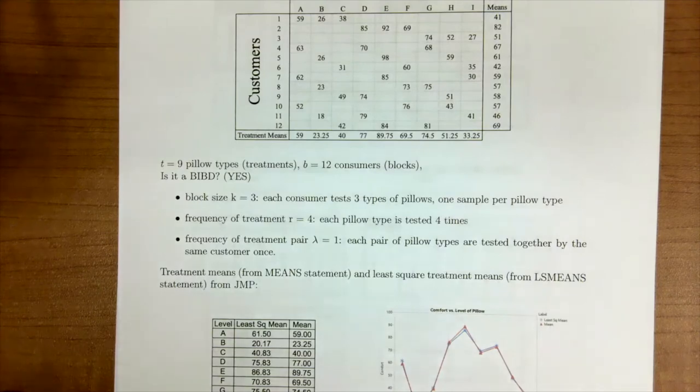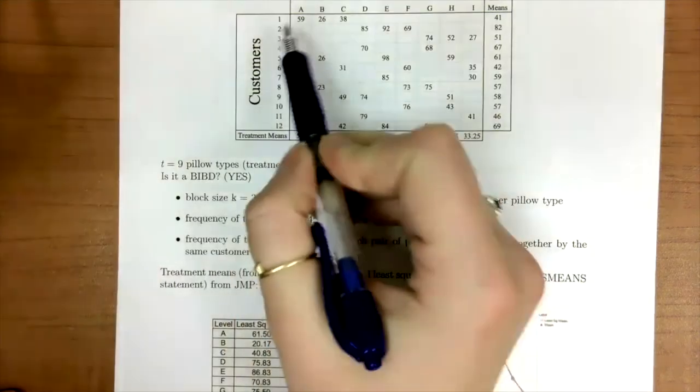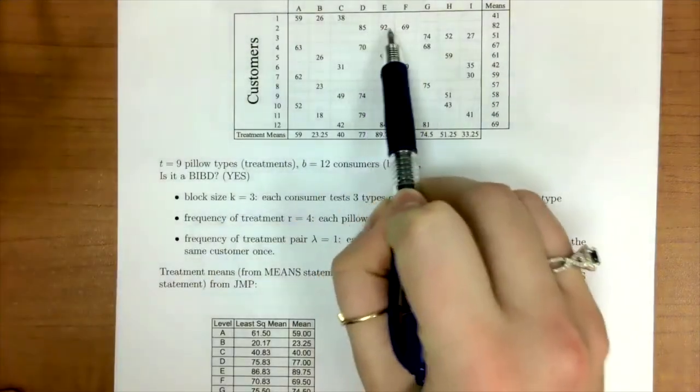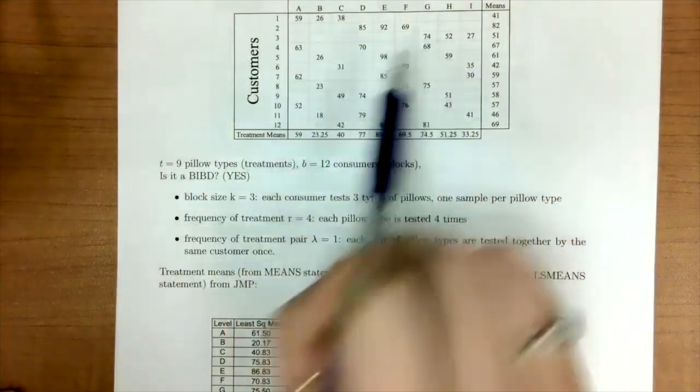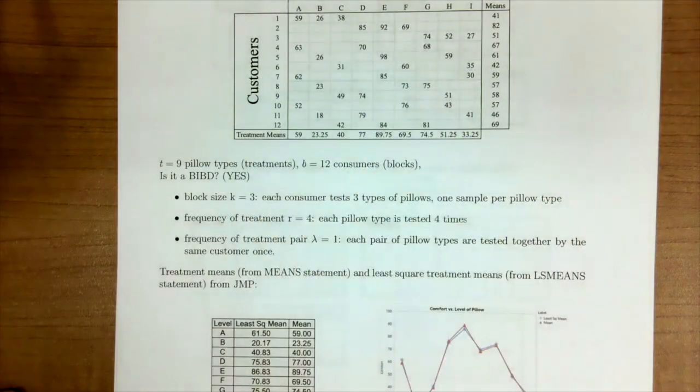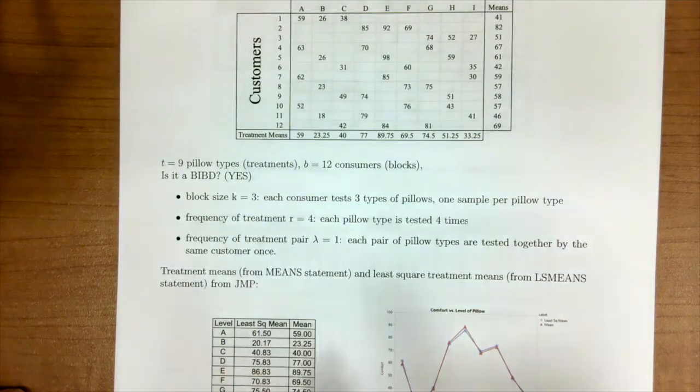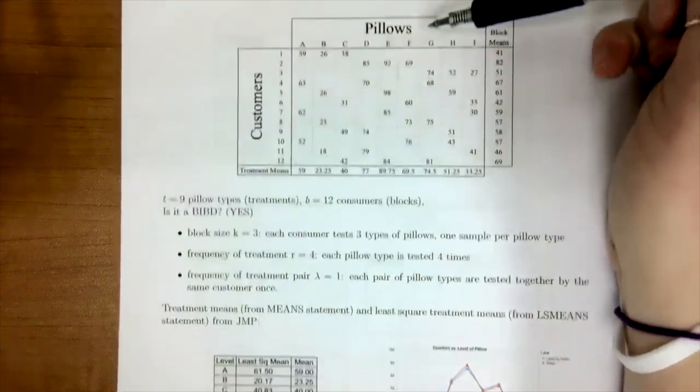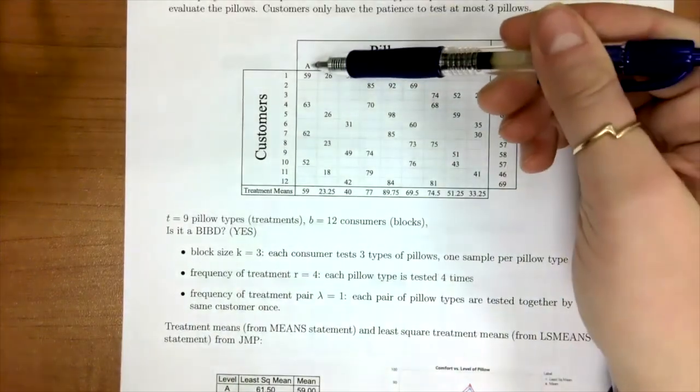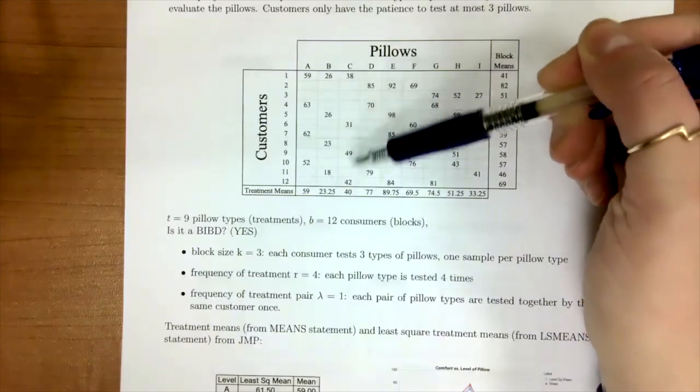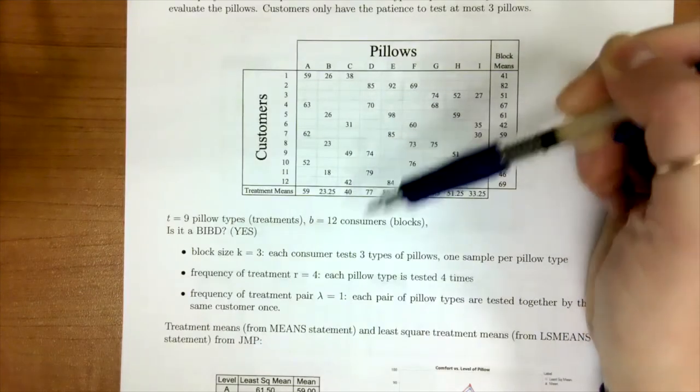So our block size is 3 because if we look at each block, which is the customer, each customer tests three times. So k is 3. Our frequency of treatment is 4. If we go up to our pillows, which is our treatment, and look down the columns, we can notice that each treatment is seen four times. So r is 4.